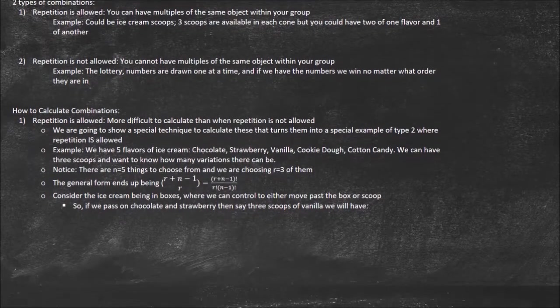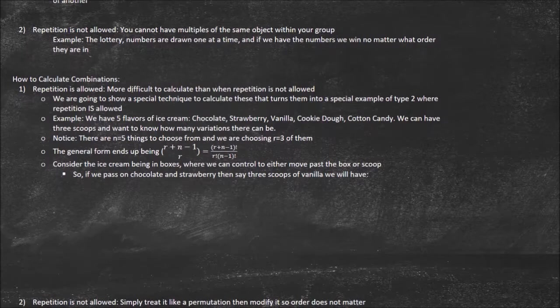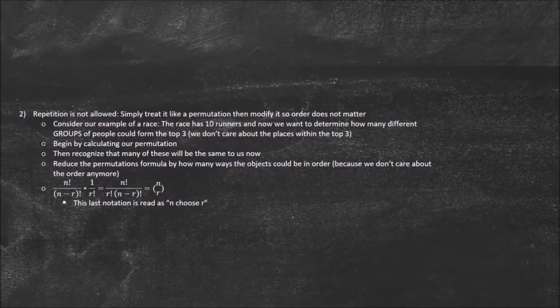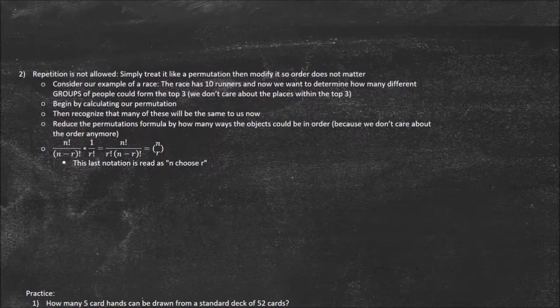So how do we calculate combinations? When repetition is allowed, these are actually more difficult than when repetition isn't allowed — it's kind of the opposite of permutations, where it was easier when repetition was allowed. This is probably the hardest of the four types: combinations and permutations, each with or without repetition. So I'm going to first show you repetition is not allowed, where you simply treat it like a permutation and then modify it so order doesn't matter.